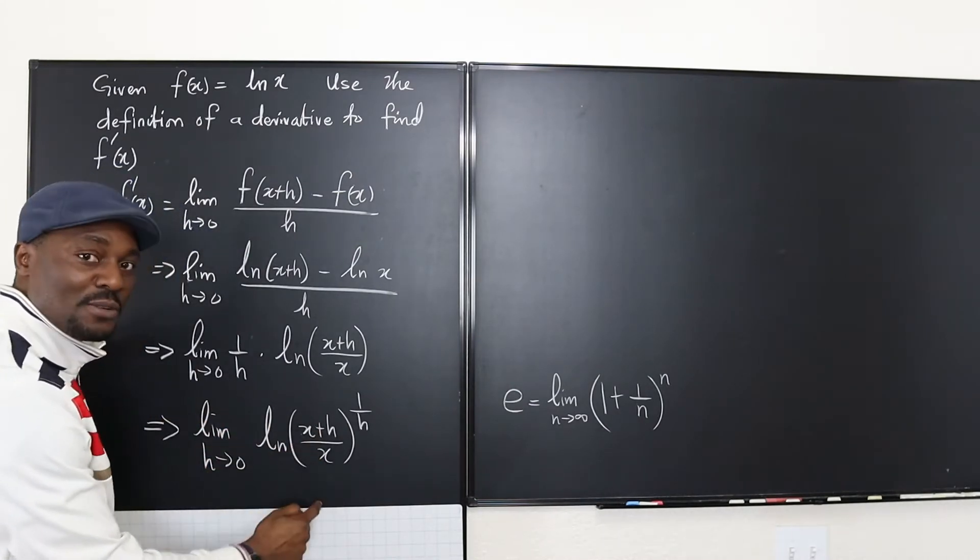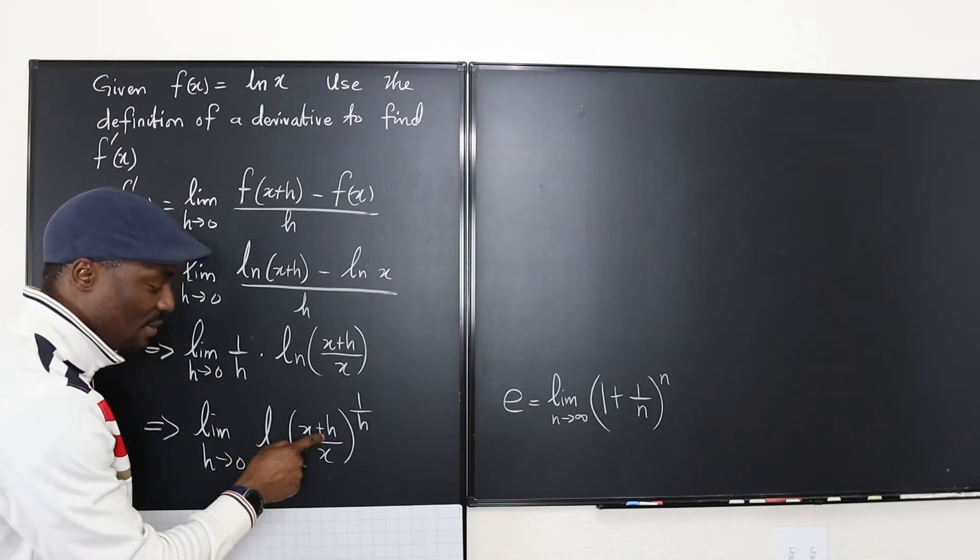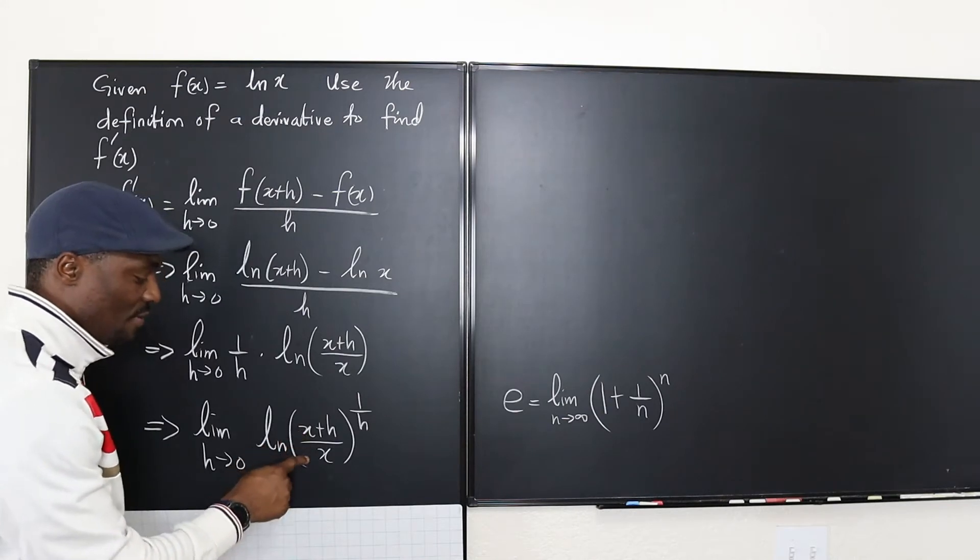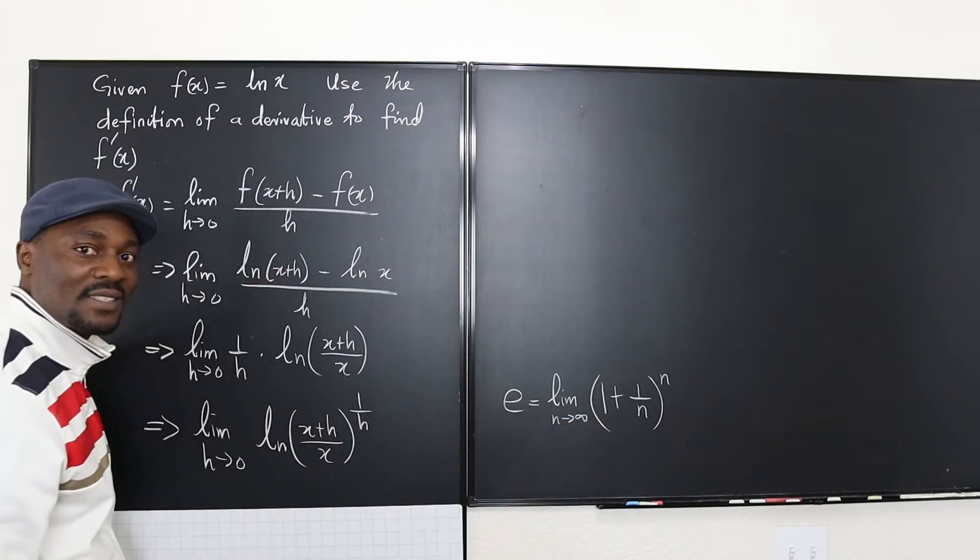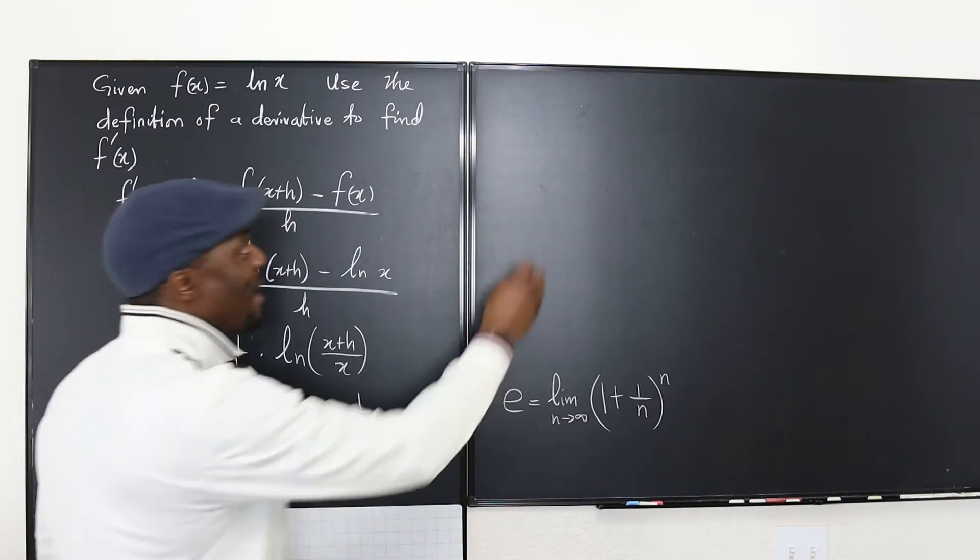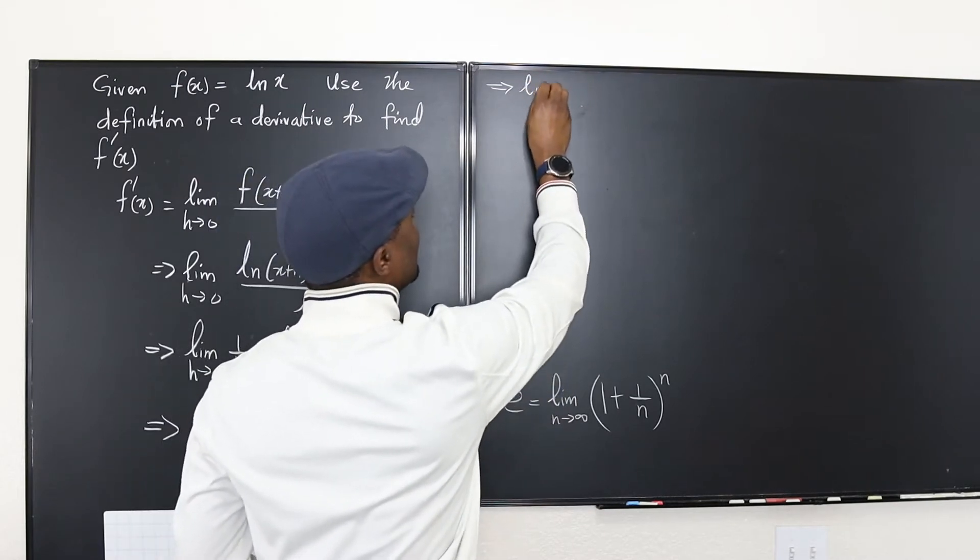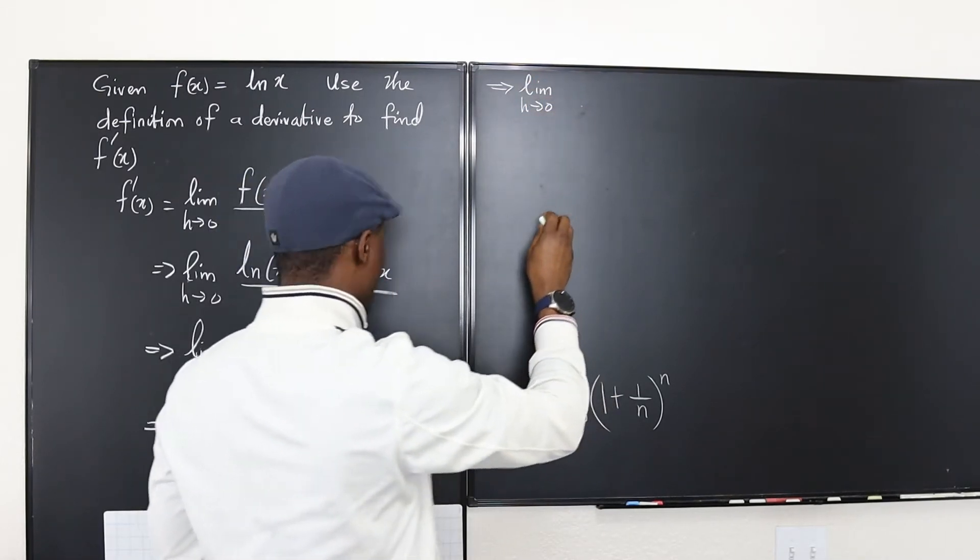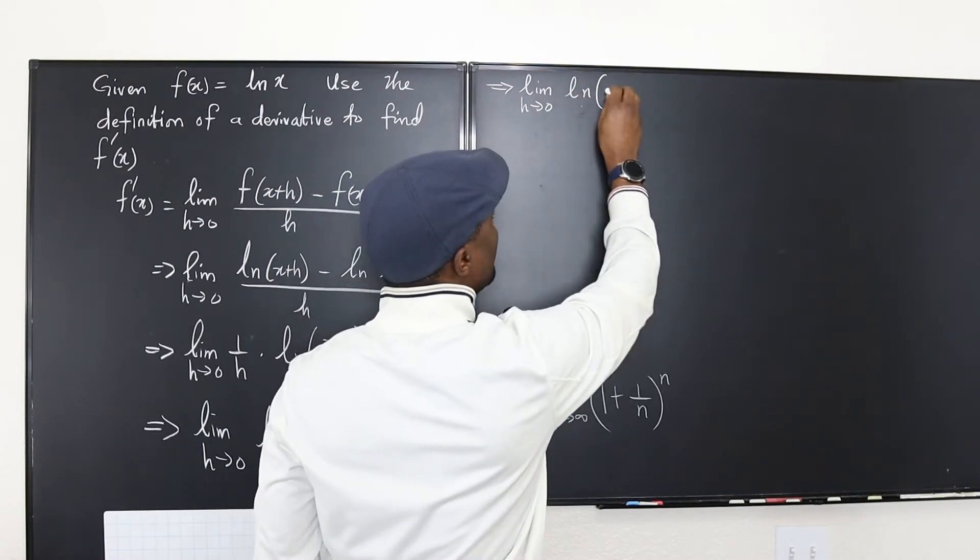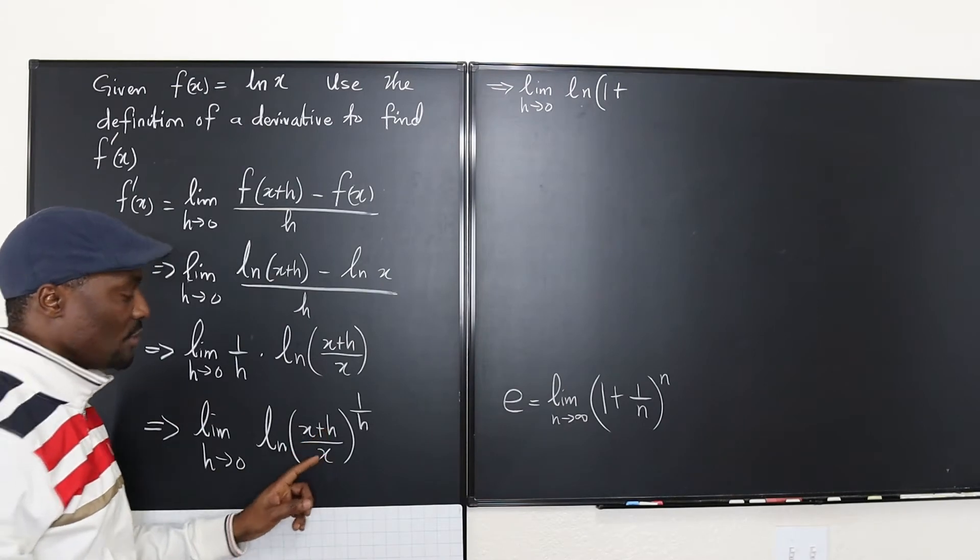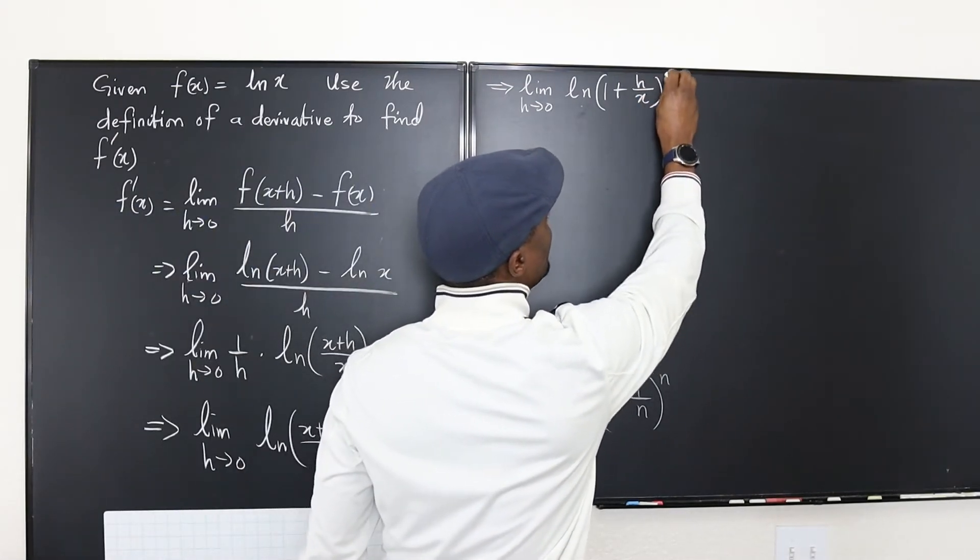If I break this into two if I split the numerator I'm going to have x over x plus h over x. Well what is x over x? 1. It's going to look like this. Let's start from there. So I'm going to say this is equal to the limit as h goes to zero of the natural log of an expression 1 plus h over x. I'm going to have h over x raised to 1 over h.